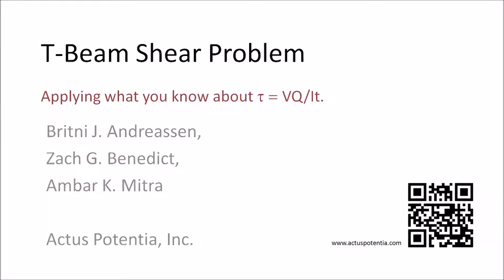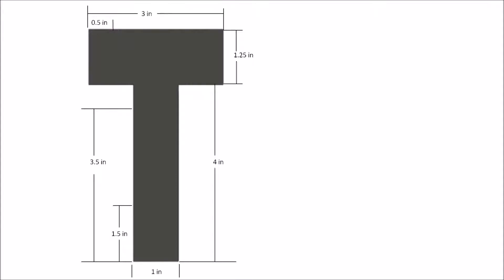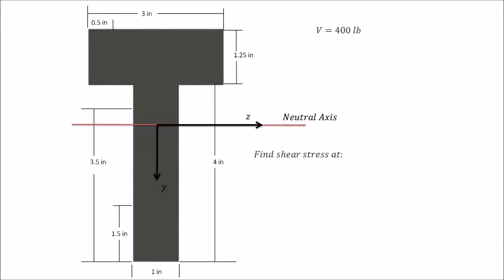Today we are going to look at a T-beam problem and apply what you know about tau equals VQ over IT to find the shear stresses and shear flow in the cross section. Here is our cross section: it's 1 inch wide by 4 inches high on the web, and 1.25 inches high by 3 inches wide on the flange located at the top.